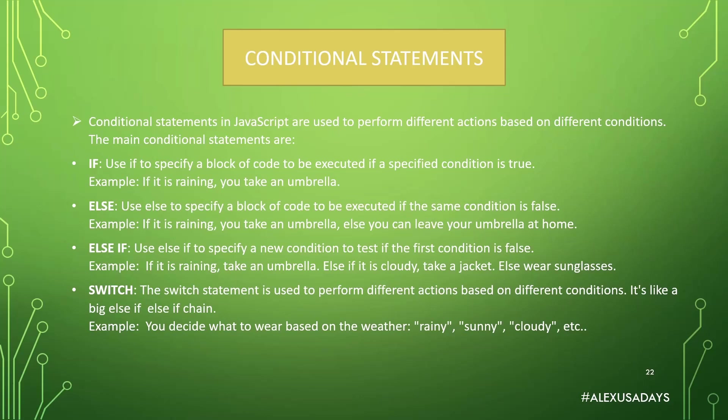For example, if it is raining you take an umbrella, else you can leave your umbrella at home. The `else` block runs if the first condition is false. Then there is `else if` — use `else if` to specify a new condition to test if the first condition is false. For example: if it is raining take an umbrella, else if it is cloudy take a jacket, else wear sunglasses. So if there are multiple conditions, you'd use if, else if, else if, and then finally else.